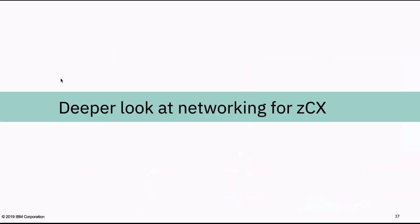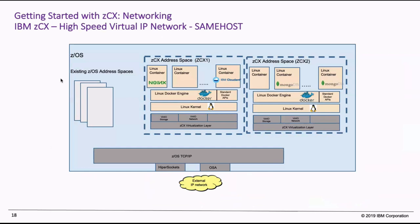Let's take a deeper look at the networking for ZCX. We'll introduce the notion of this high-speed virtual IP network, based on SameHost technology — you may already be using it today. SameHost is a virtual point-to-point or point-to-multipoint link device driver within ZOS — if you're using Enterprise Extender, that traffic is coming across a SameHost link. This is what allows us to get packets in and out of VTAM and into and out of the TCP/IP stack. We took that underlying SameHost technology, expanded it, and made it unique to ZCX. In this picture, we have a single ZOS LPAR, a single TCP/IP stack with external connectivity through Hypersockets or OSA, and two ZCX instances.